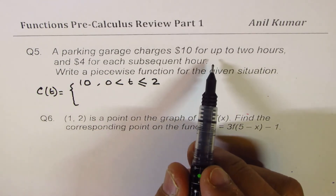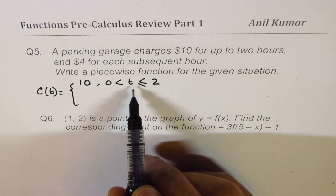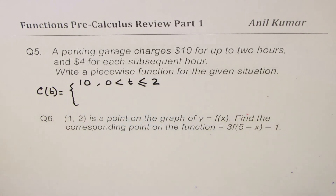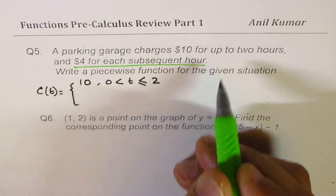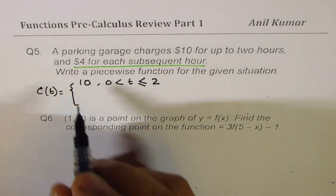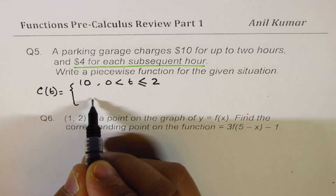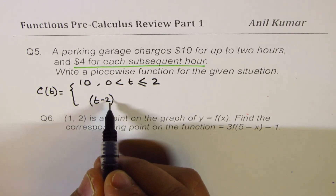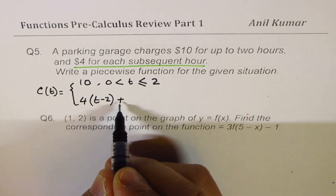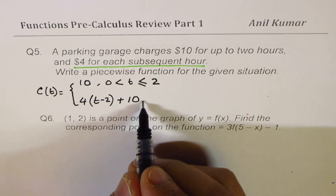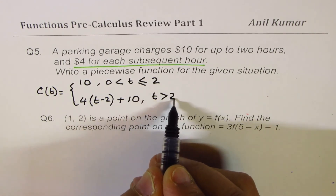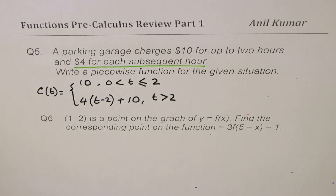We have two pieces. For time from 0 to 2 hours (t ≤ 2), the cost is a flat rate of $10. For time greater than 2 hours, you pay $10 for the first two hours plus $4 for every extra hour beyond two, so cost = 4(t - 2) + 10.